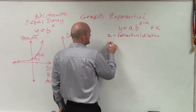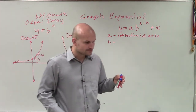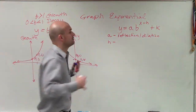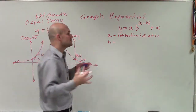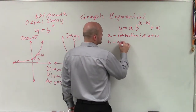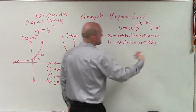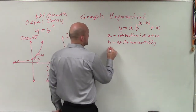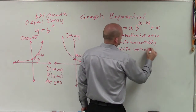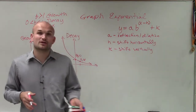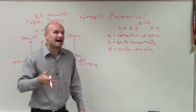Next, h determines if our graph is going to shift left or right. Remember, it's written as (x − h) inside the function, so the shift is opposite of h — h represents a horizontal shift. Then k represents a vertical shift, telling you whether you're shifting the graph up or down. The key distinction is that h is inside the function and k is outside the function.